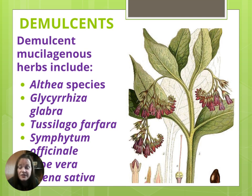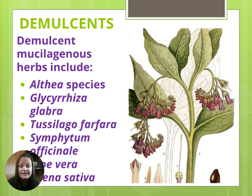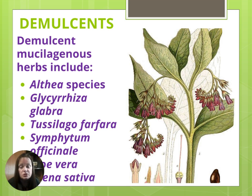Other demulcent herbs include althea — that is mallow. Marshmallow and other types of mallow are in the althea genus. Glycyrrhiza, that's licorice, has some mucilage in it. Tussilago — which means 'the cough dispeller' in Latin — is another classic demulcent herb with antispasmodic, anti-inflammatory, and bronchodilating actions, as well as demulcent effects on the respiratory passages. Symphytum, or comfrey, is another classic demulcent used topically on wounds or ingested orally for trauma. It contains allantoin, a cell-proliferating agent that speeds up cell division, helping wounds heal more readily while soothing pain, and can be taken internally for broken bones and traumatic injuries.